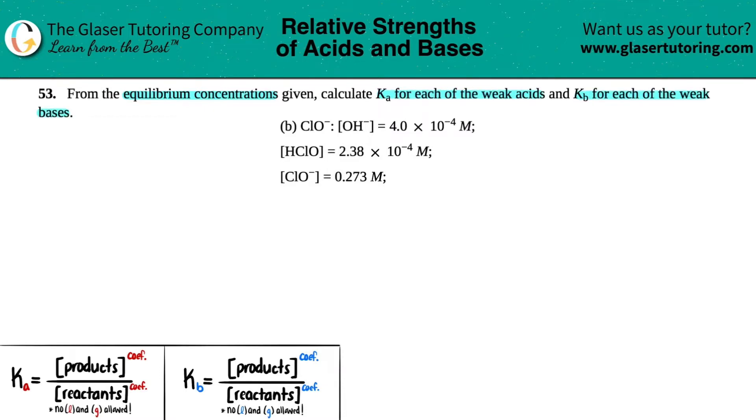Okay, so the first thing is we've got to figure out, are we dealing with a weak acid or a weak base? Well, in letter B, they told us that we're starting off with ClO-, so hypochlorite. And they told us that we have an OH- solution, an HClO concentration, and then the ClO- concentration.